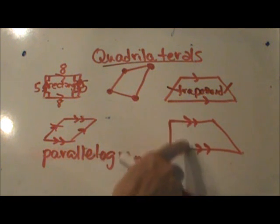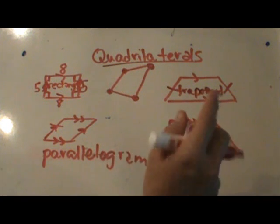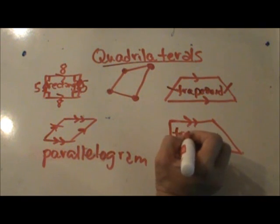And then this one, these two sides are parallel. These two don't look parallel, do they? But we don't know. This one is a trapezoid.